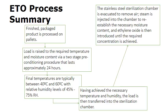In principle, the products are finished, packaged, and processed onto pallets. These pallets are then fed into the ethylene oxide gas chamber. The load is raised to the required temperature and moisture content, and this pre-conditioning phase typically lasts about 24 hours. Final temperatures are between 40 and 60 degrees Celsius with humidity of 45 to 75 percent.